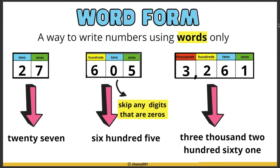The next one is word form — this way is to write numbers using words only. So 27 is written as twenty-seven, 605 is written as six hundred five, and note that we skip any digits that are zeros, so if there's nothing in the tens place we go from 600 to 5. And 3,261 is written as three thousand two hundred sixty-one.